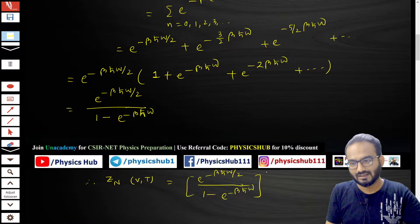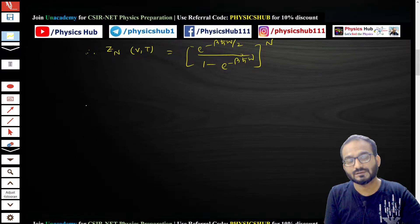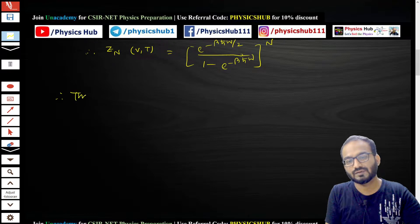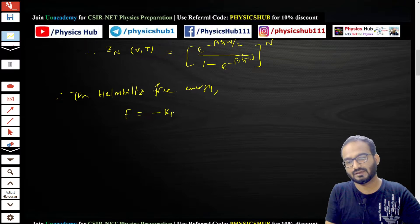The Helmholtz free energy is defined as F equals minus k_B T ln Z.